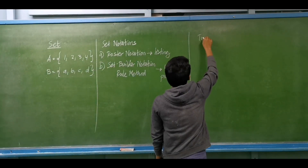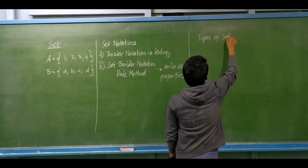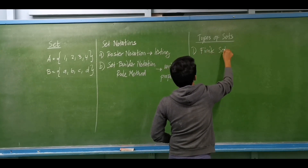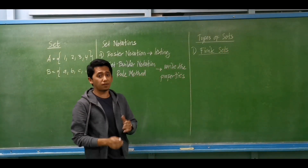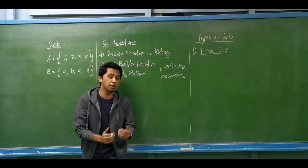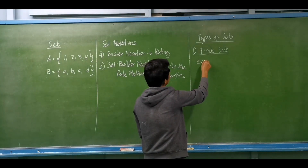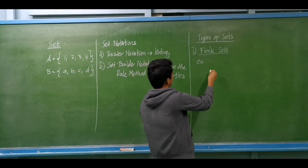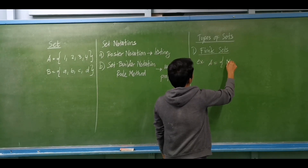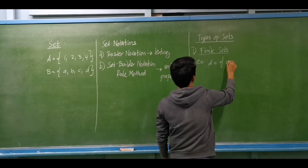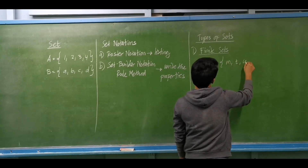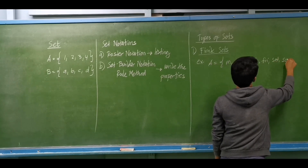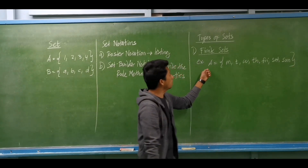After set notations, we have the different types of sets. The first type is finite sets. If we say finite, we know the limit of a given set — we know the first element and we know the last element. For example, the seven days of a week. We call it set A. The elements are Monday, Tuesday, Wednesday, Thursday, Friday, Saturday, and Sunday. This is an example of a finite set — we know the first element and we know the last element.